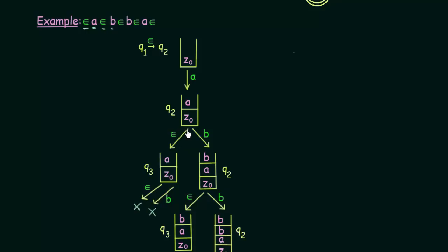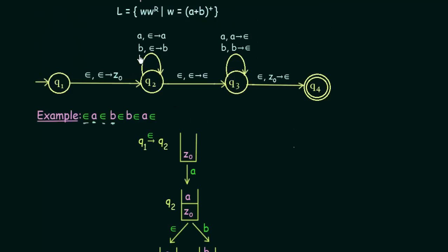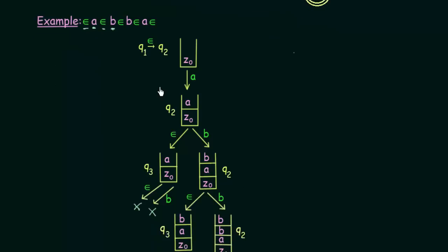We backtrack to the earlier branch. Instead of reading epsilon after A in Q2, we take B. In Q2, reading B means we don't pop anything but just push B onto the stack, and we still stay in Q2. So this new B is pushed onto the stack on top of A and Z0.